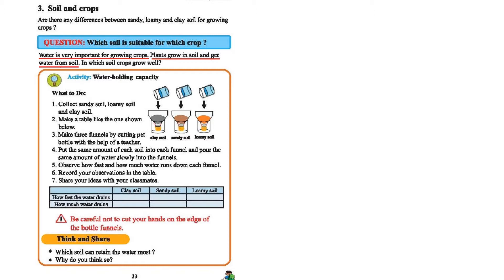You can see there are some sentences marked in red color. First of all, please mark those sentences, then listen to what I say. In this page we start with soil and crops. Are there any differences between sandy, loamy, and clay soil for growing crops?